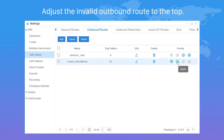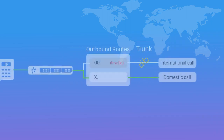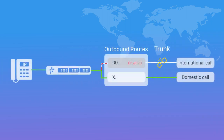Don't forget to adjust the invalid outbound route to the top. Now whenever internal users make international calls, the system will send them out through the invalid SIP trunk.